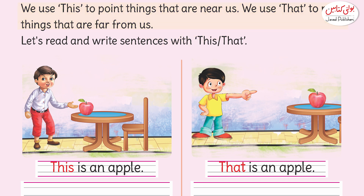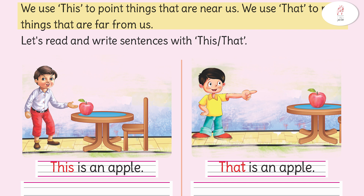We use 'this' for things which are very close to us — things we have or can reach. 'That' is used for things that are far from us, things we can't put our hands on. We use 'this' to point to things that are near to us, and we use 'that' to point to things that are far from us. Let's read and write sentences with 'this' and 'that'.